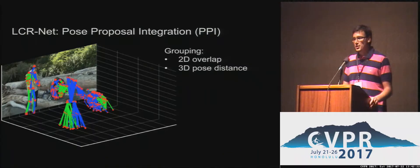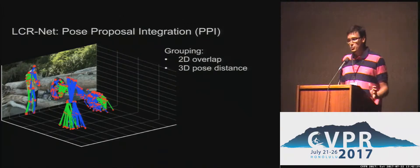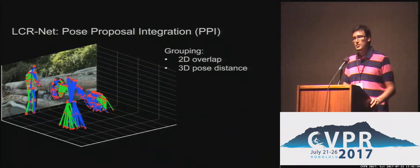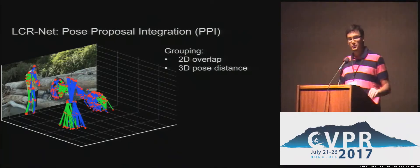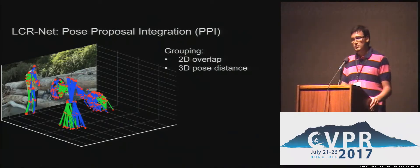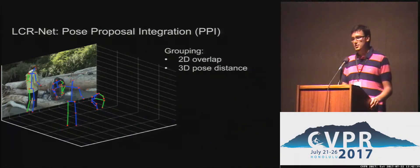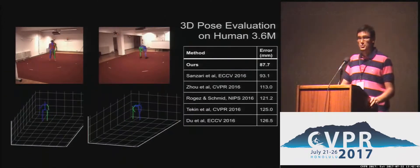To obtain the final estimate, rather than just using non-max suppression, we propose to integrate all these pose proposals. We group the poses using 2D overlap and 3D pose distance, then obtain the final estimate by applying a weighted average on these groups of poses, yielding the final results.